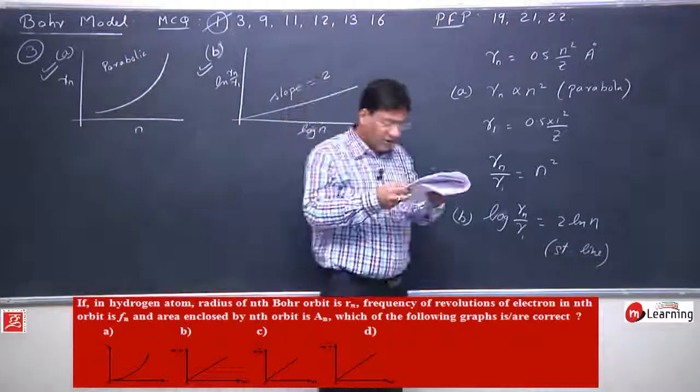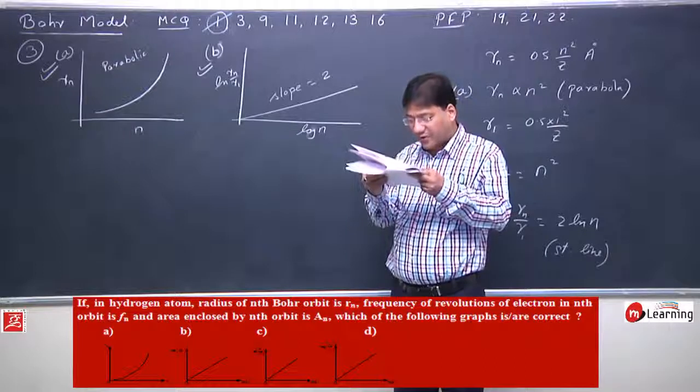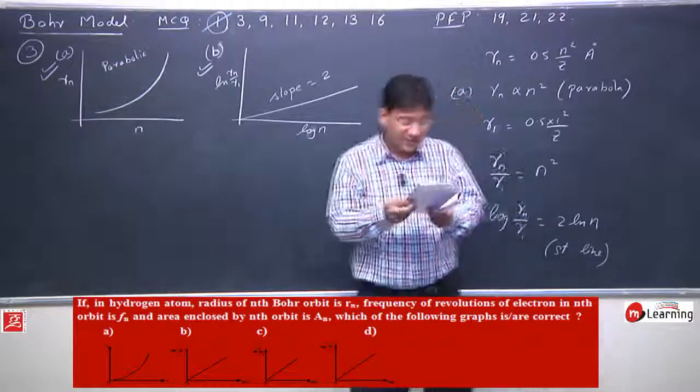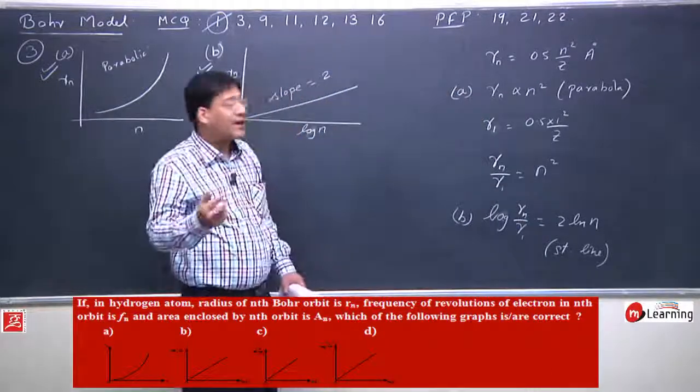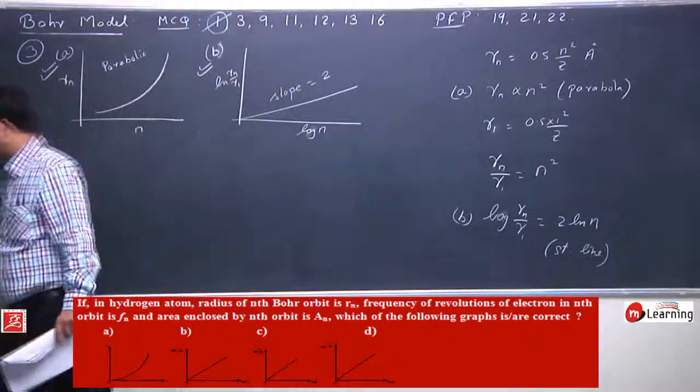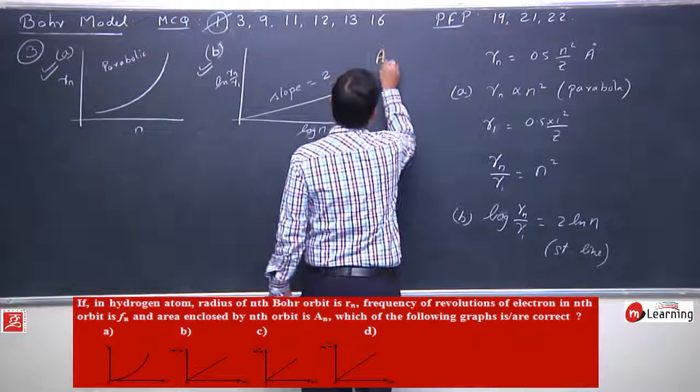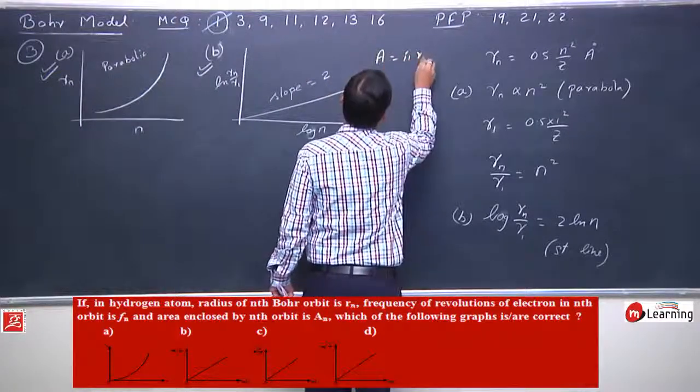Now let's see the c option. Log of An by A1 versus log r. Now what is the area? Pi r square. Area is pi r square.